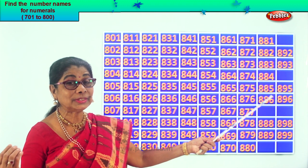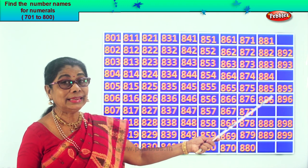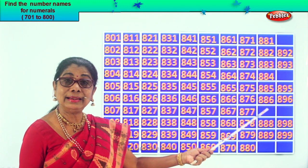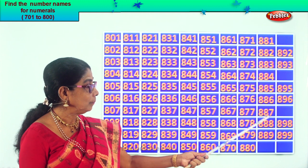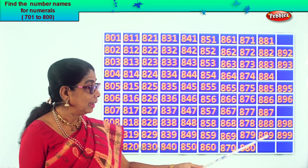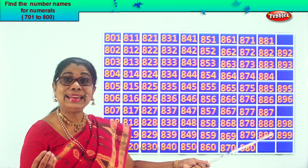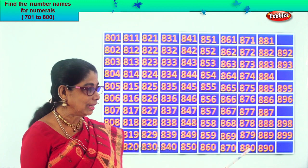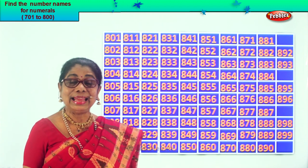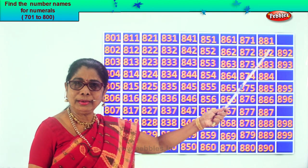After 6 comes 7 — after 86 comes 87. So the missing number is 887, then 888, 889. After 89 comes 90. So the missing number here is 890. Let's look and say together: 881.